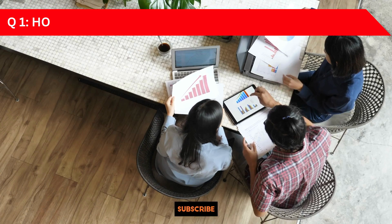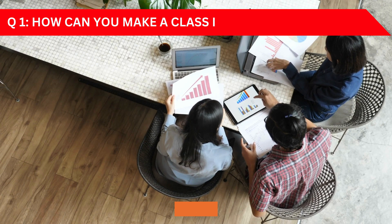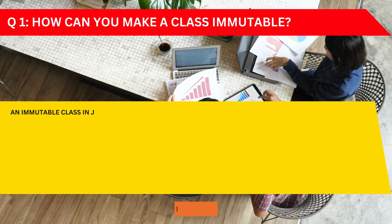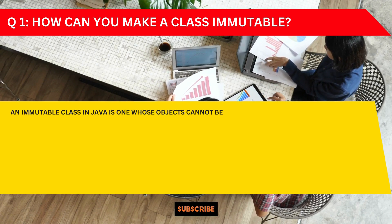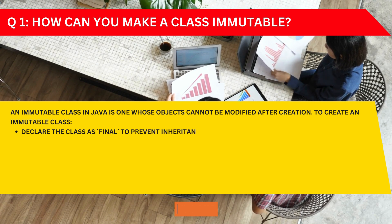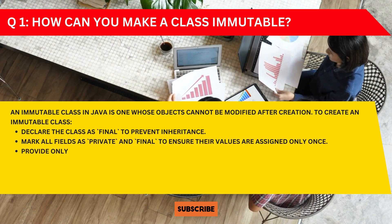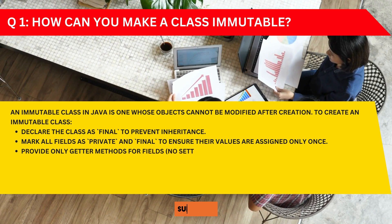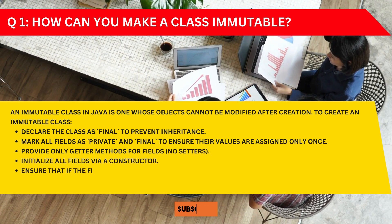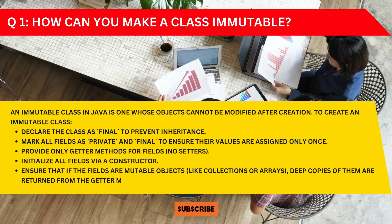Let's start with the first question: How can you make a class immutable? This is one of the favorite questions for interviewers. An immutable class in Java is one whose objects cannot be modified after creation. To create an immutable class, there are five steps to follow.